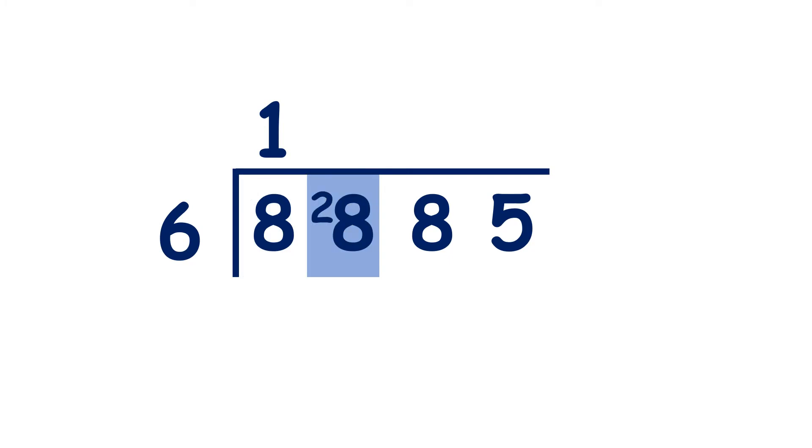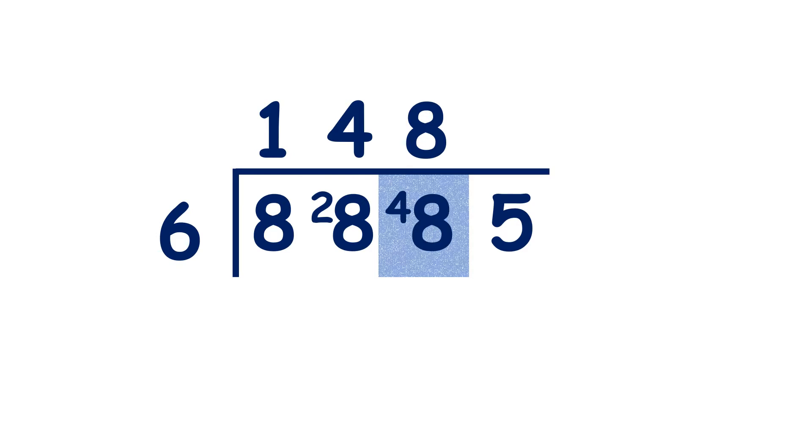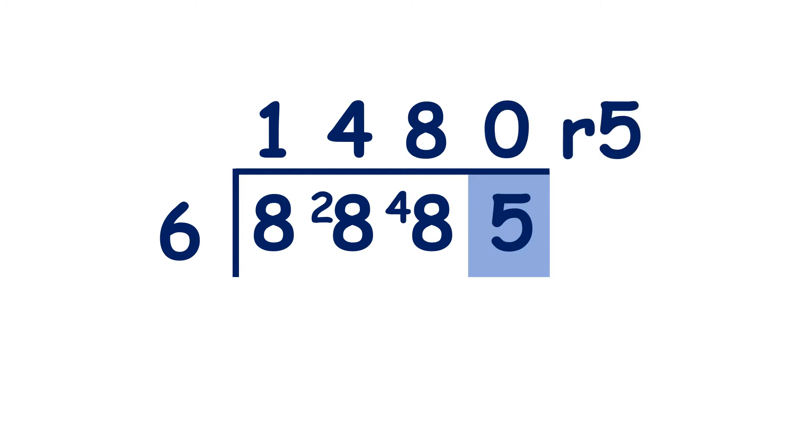28 divided by 6 is 4, remainder 4. 48 divided by 6 is 8, and 5 divided by 6 is 0, remainder 5.